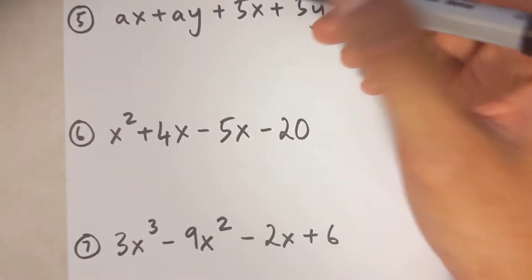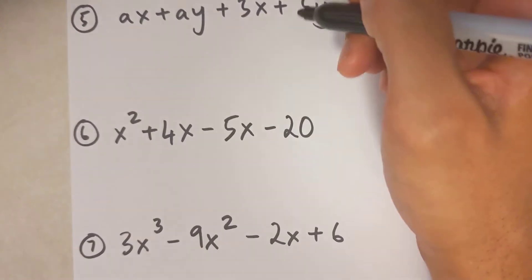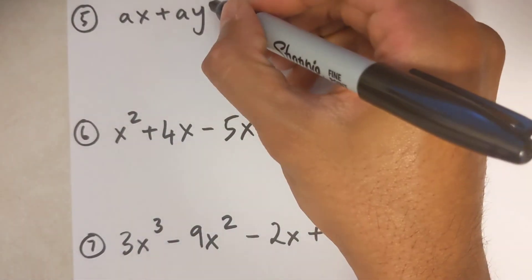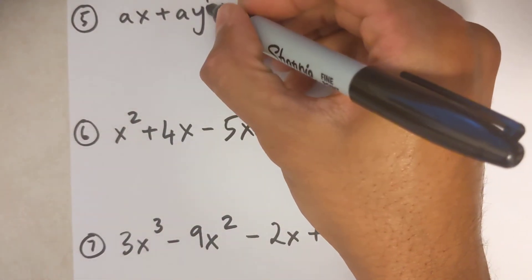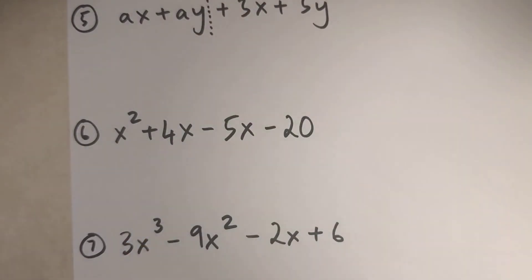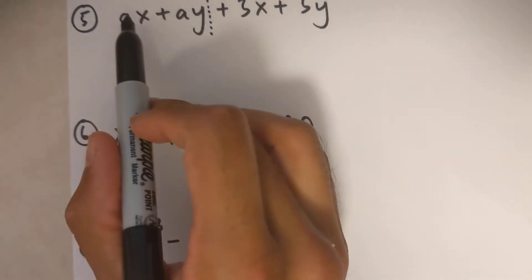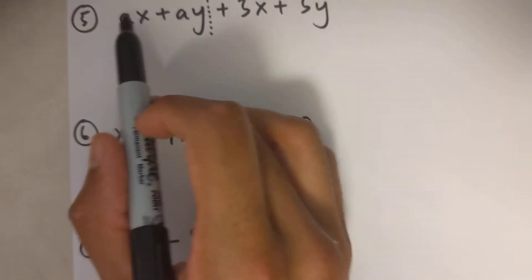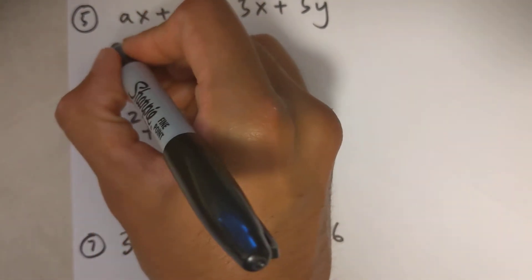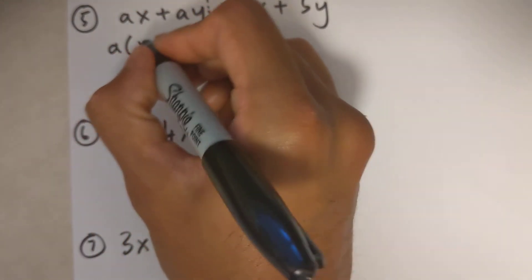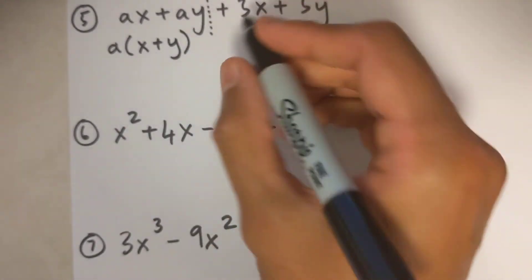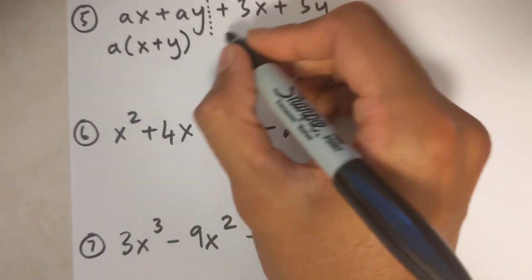I'm going to show you how to do factoring by grouping with three questions. The first thing I like to do is put a small dotted line before the sign in the middle. Then look at the first two terms and common factor: here I can common factor out an a and I'm left with x plus y, and over here I can common factor out 5.